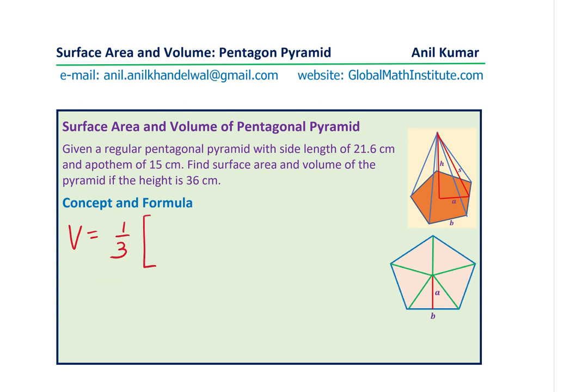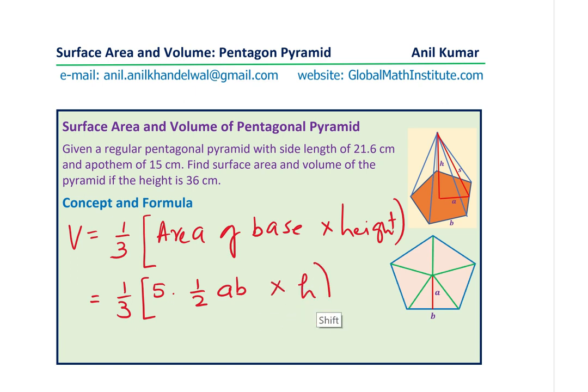So volume is one third of area of the base times height. Now in this case, we know that the area of the base is, we have five triangles, times half AB, and times H, which is the height in this particular case.